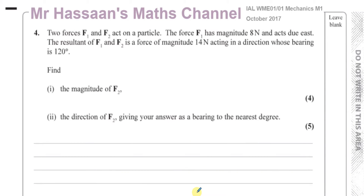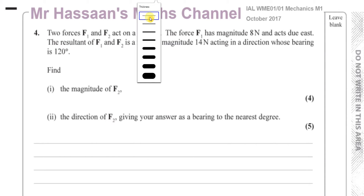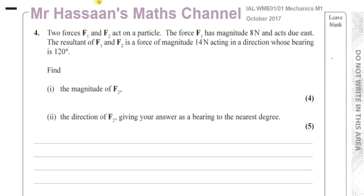Welcome back to Mr. Hassan's maths channel. This is question number four from October 2017, International A-Level Mechanics M1. This is a question about resultant forces, and it's quite an important question, part two. It seems very easy, but there's a little trick to it which many people have fallen into in the past, and we're going to look at how not to fall into such a trick.